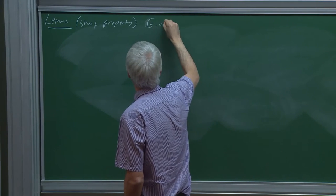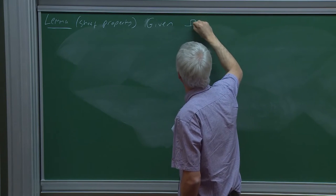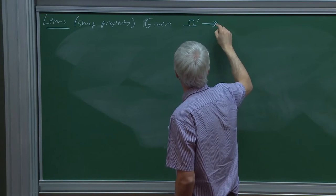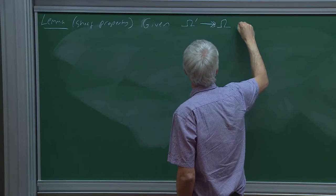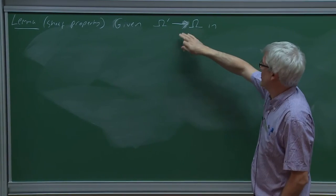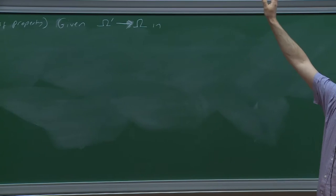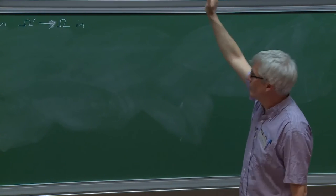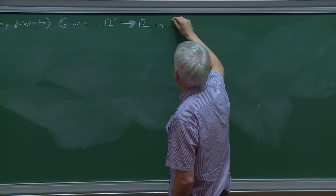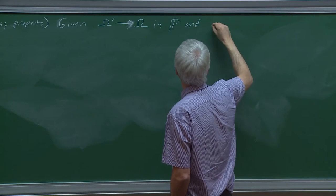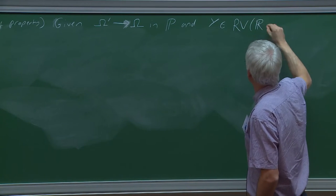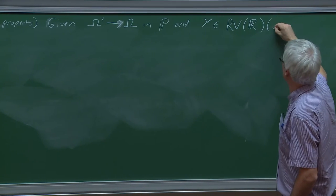So given a map in P — and in fact every map in the category of sample spaces is epimorphic — and given Y a real-valued random variable on Ω', the following are equivalent.